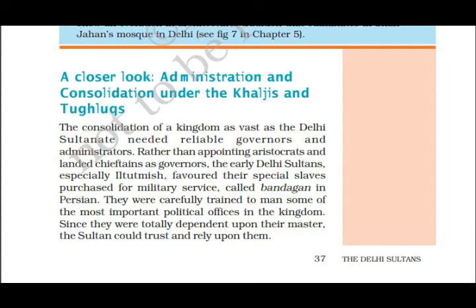The early Delhi Sultans did not trust their relatives. During this time, the practice of slavery was very prevalent in Islam. Iltutmish would assess the abilities of purchased slaves and give them high posts, trusting them greatly. They were appointed as governor-like figures in different regions. These Bandagan were carefully trained to hold some of the most important political offices in the kingdom.